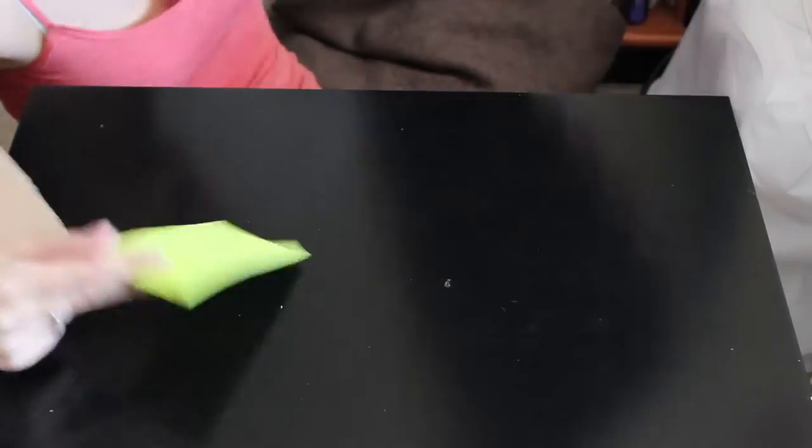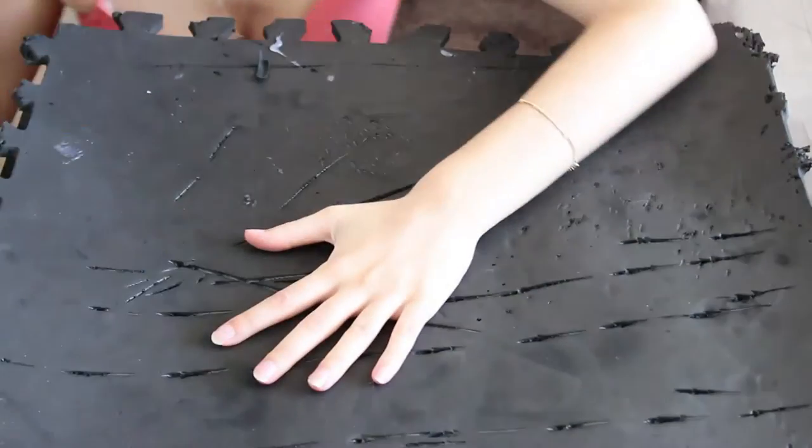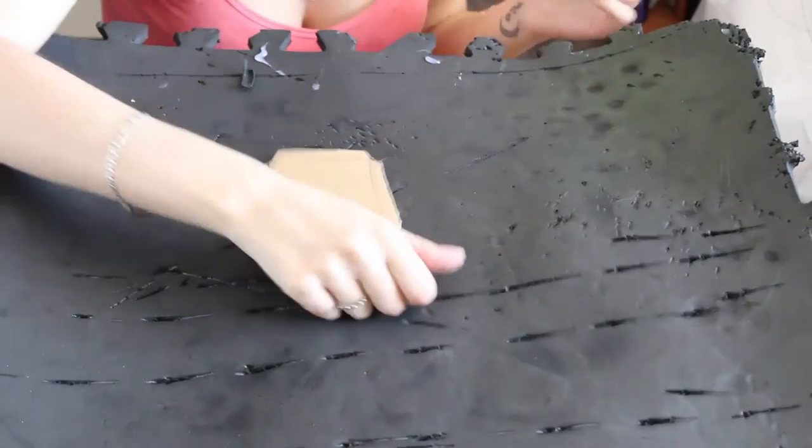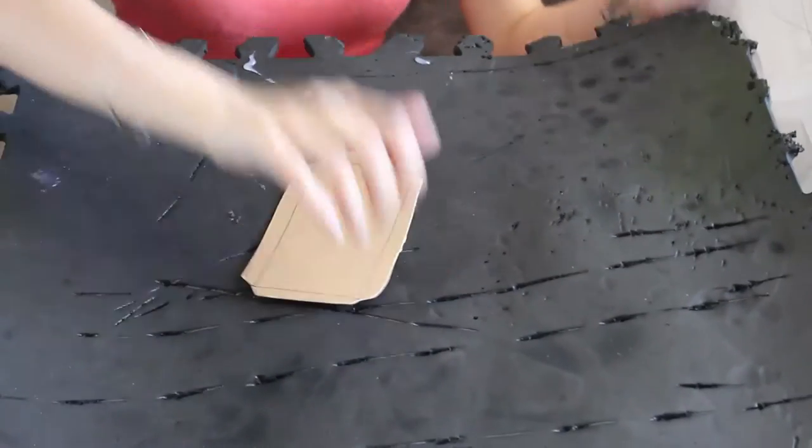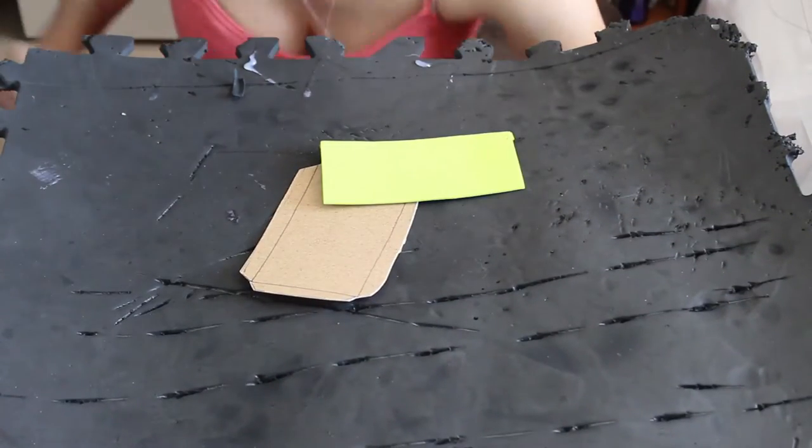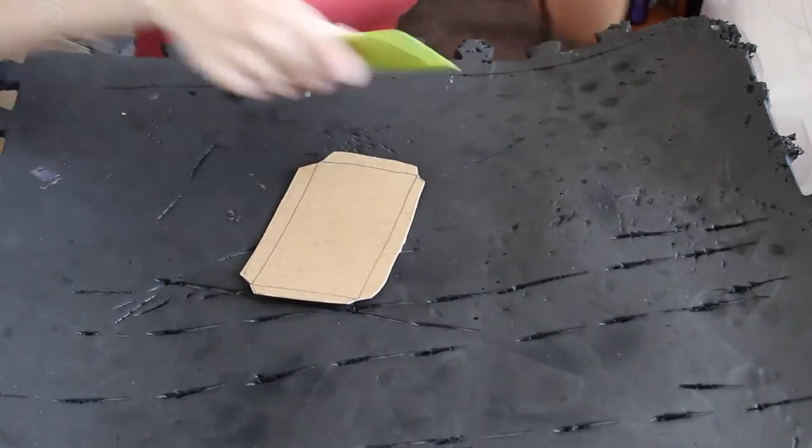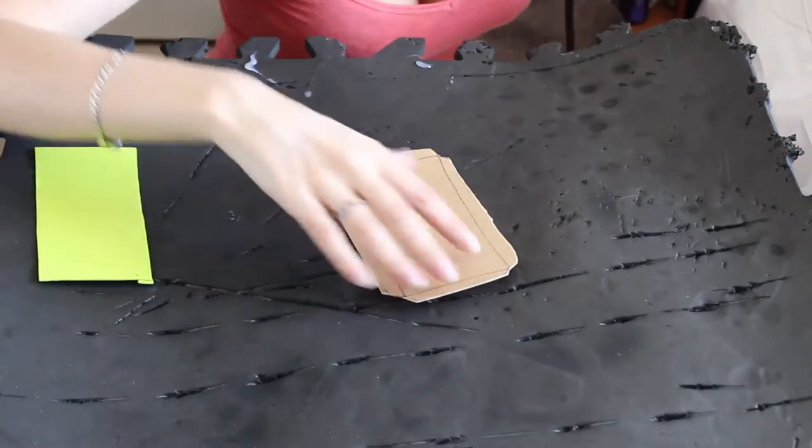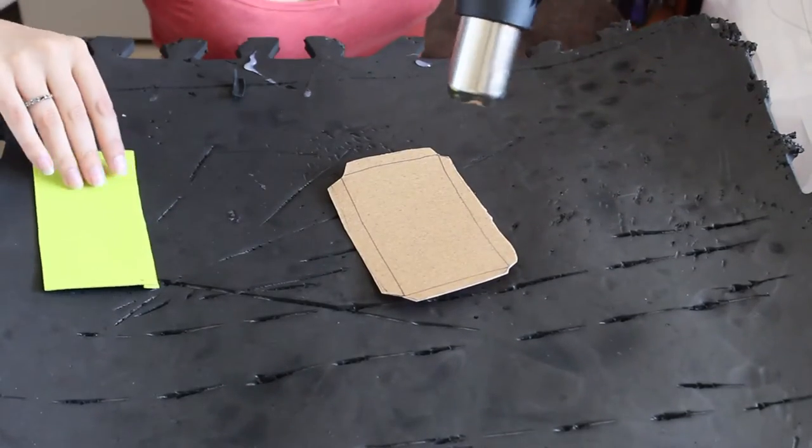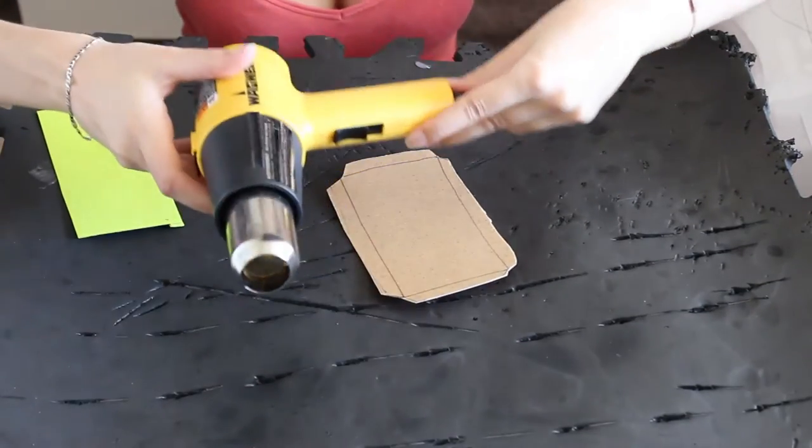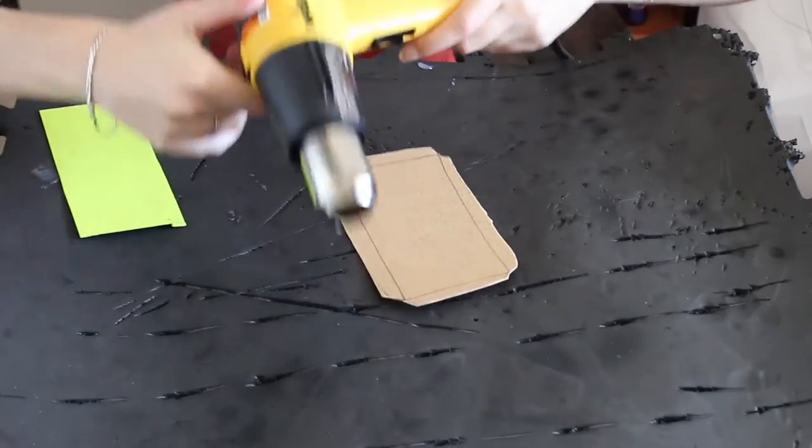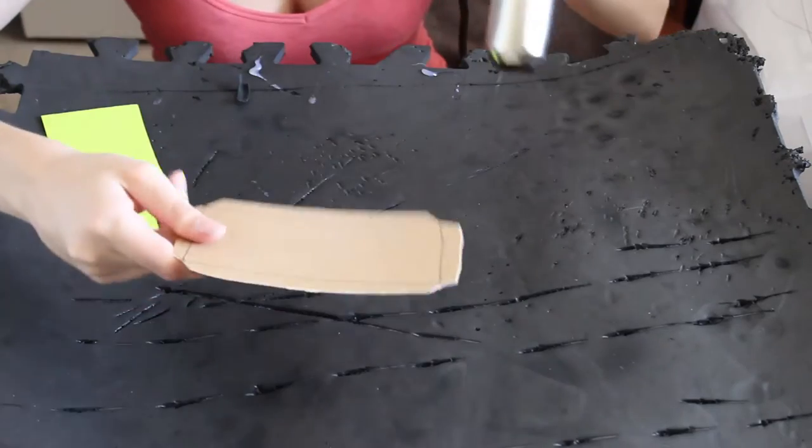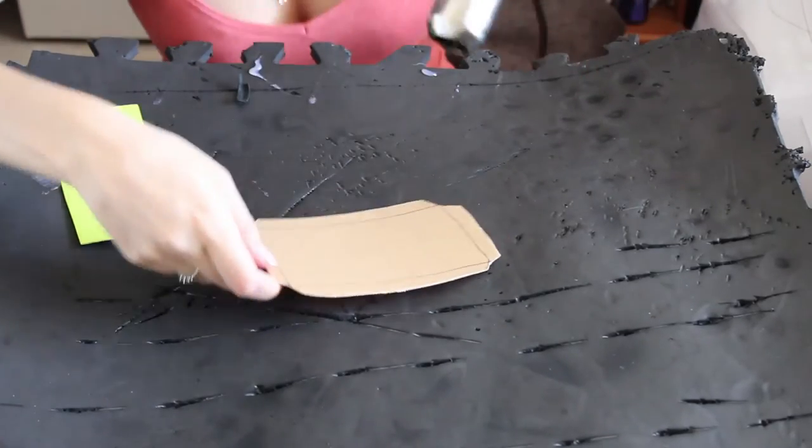When heating worbla, use a heat gun and do it over a surface that you don't care if it gets ruined. So this is a square of EVA foam and I use it for all my worbla purposes. This way it doesn't harm the table, the carpet, or any other surface. When heating worbla, you want to heat it until it gets slightly darker in color. This is a standard heat gun that you can get from most hardware stores. It doesn't have to be expensive, it doesn't have to be powerful, it just needs to get the job done for you. So we're going to start by heating it up.